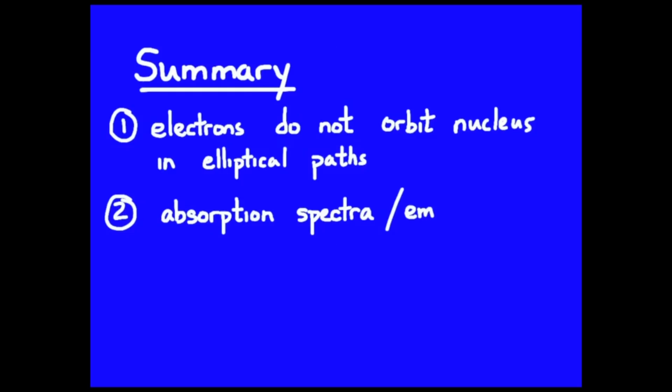The second point was absorption and emission spectra. The challenge here is whether you have an absorption or an emission spectrum. It all has to do with where the source, the original source of the photons comes from.